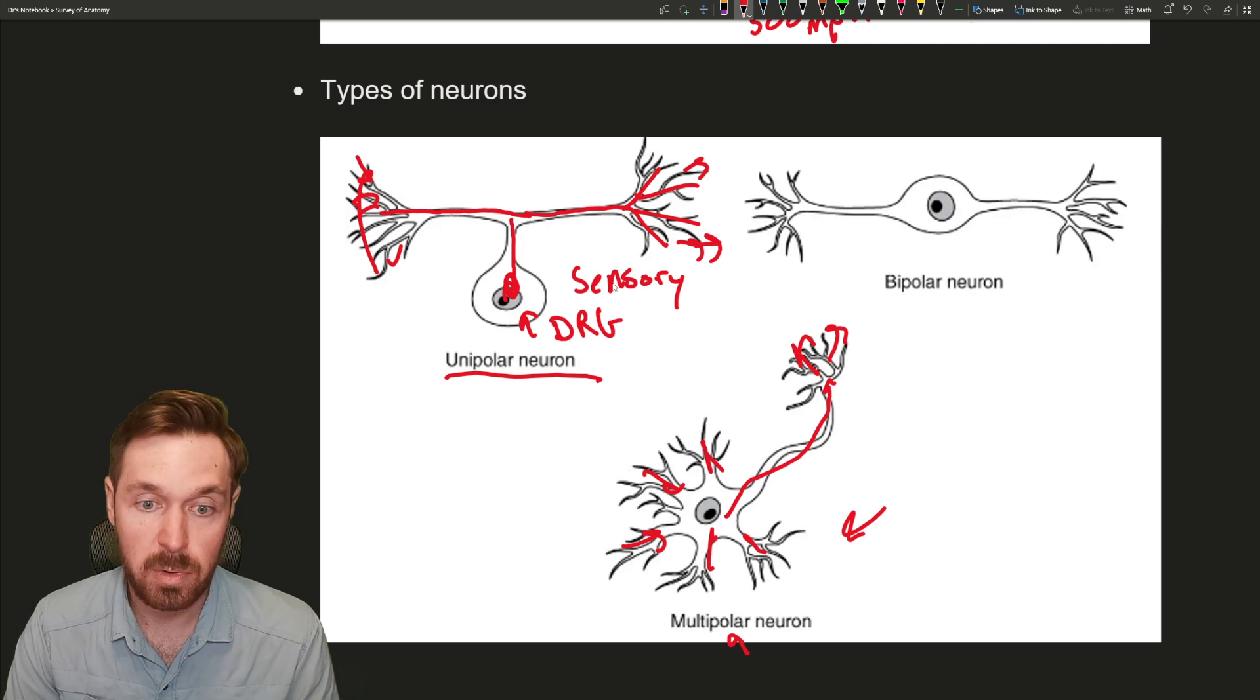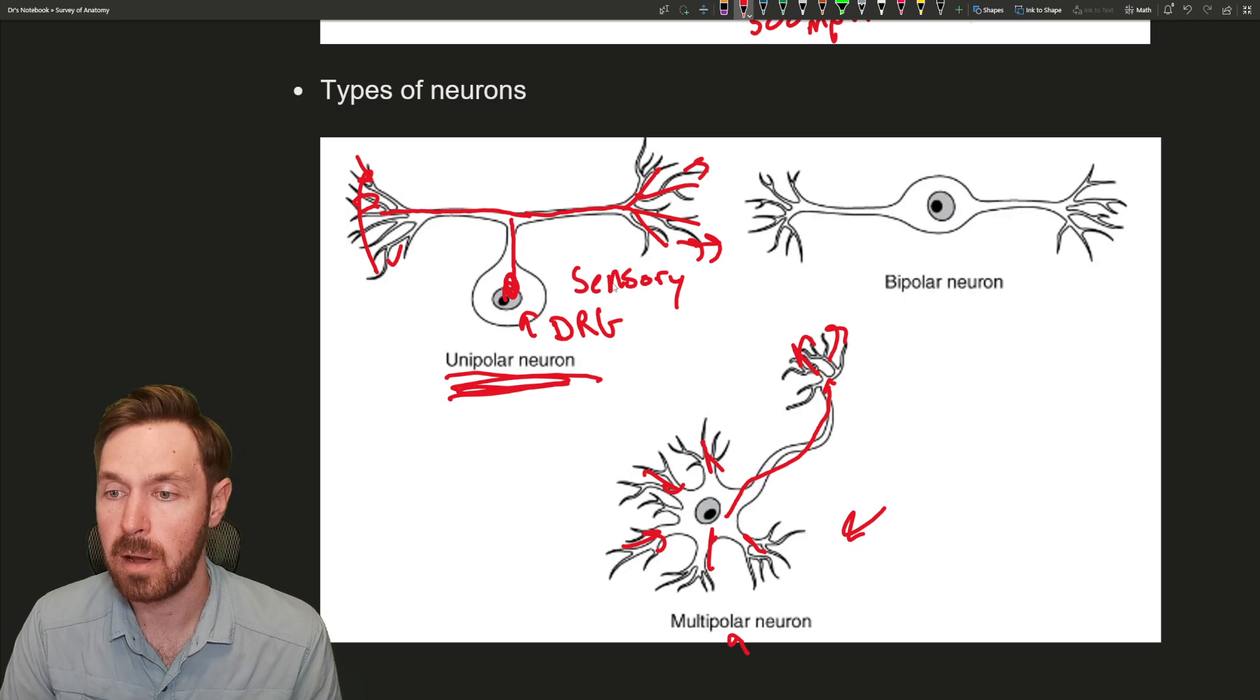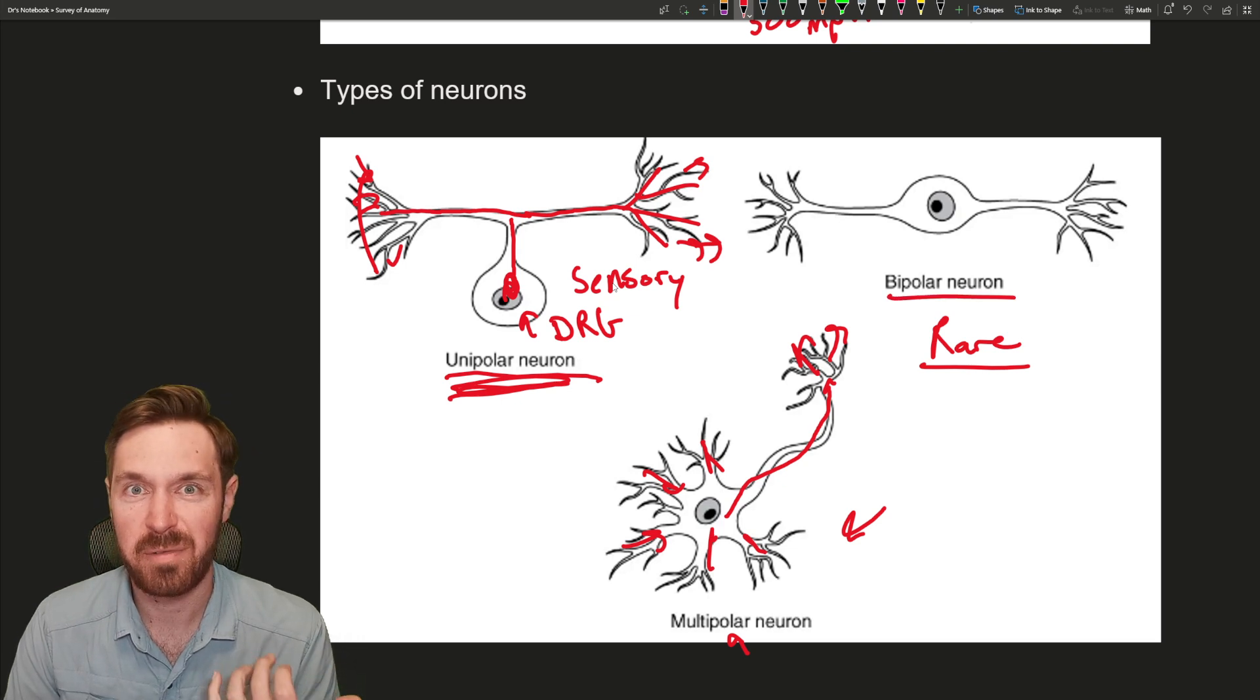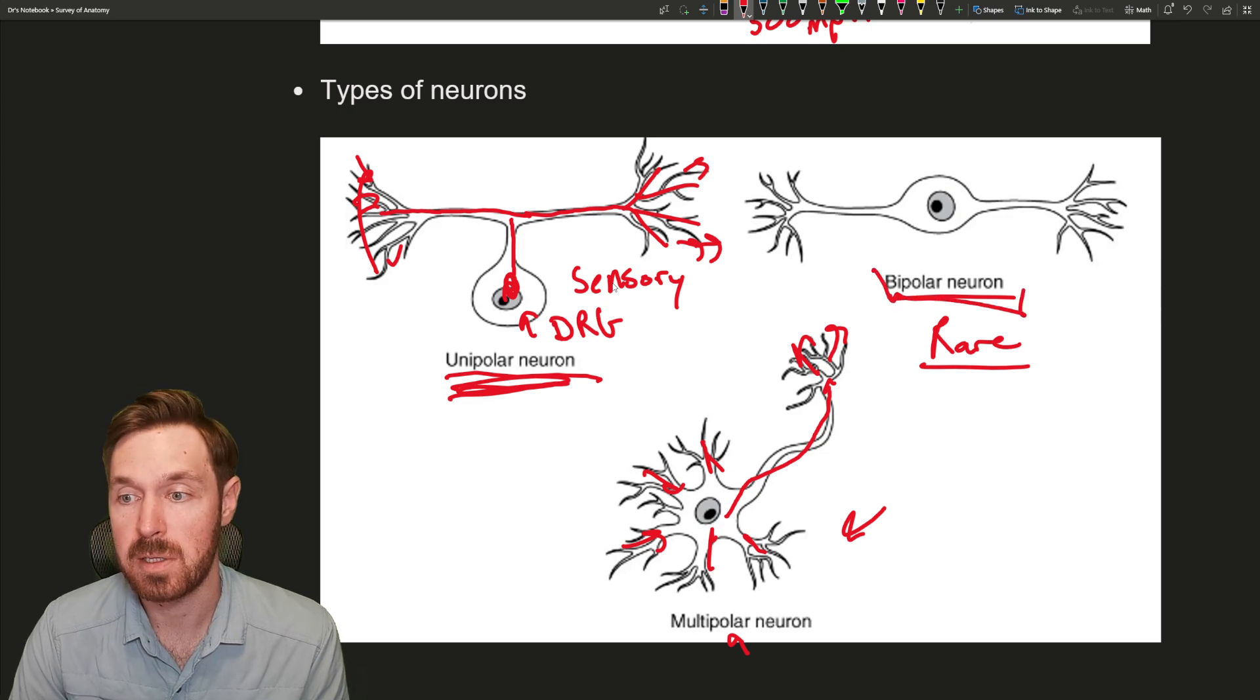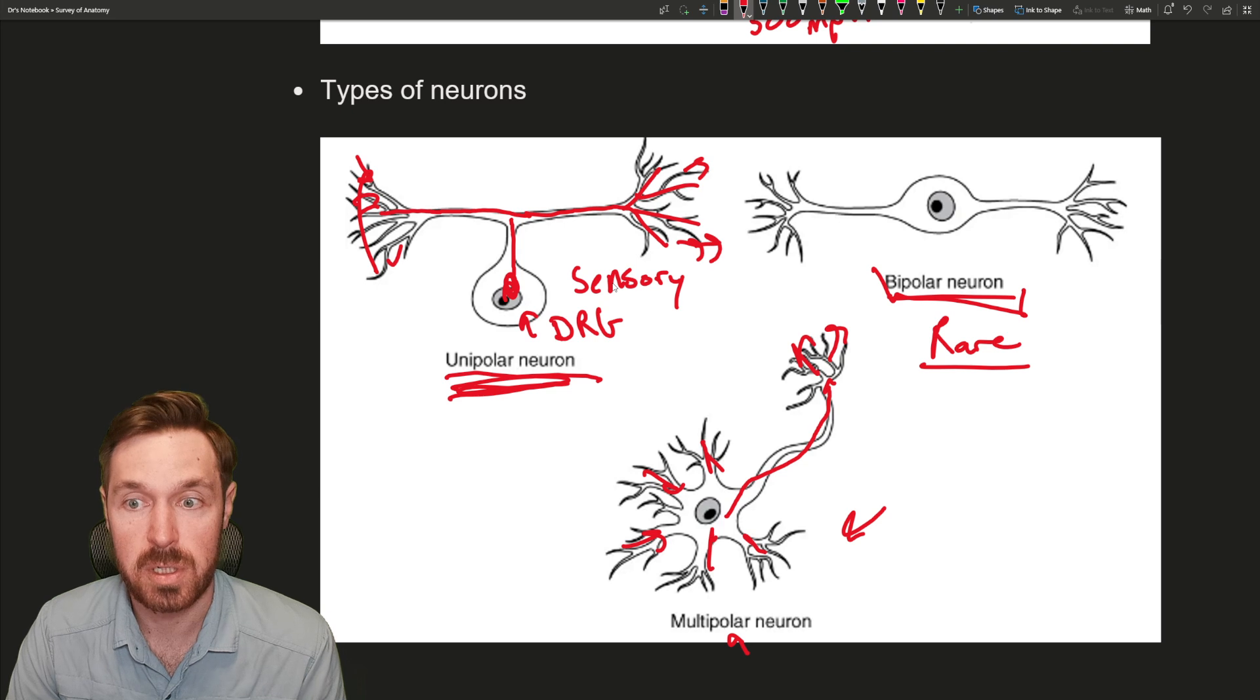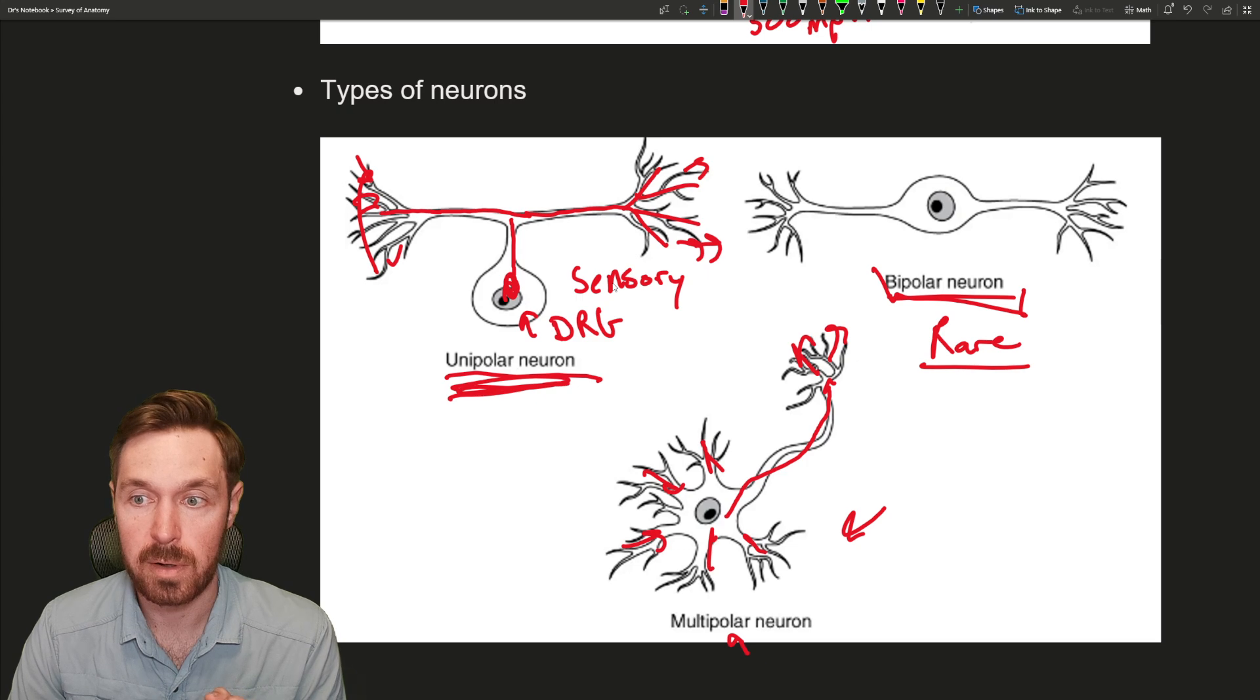Dorsal root ganglion, and all your sensory neurons are very common unipolar neurons here, and they are typically myelinated as well. And then a rare one here would be the bipolar neuron. The bipolar neuron is only found in vision, so some in your retina for visual processing, and then also your olfactory system as well for smell. Pretty much those are the only places. These are non-myelinated or very short and small neurons, and they're just little short communication bridges between two other neurons.